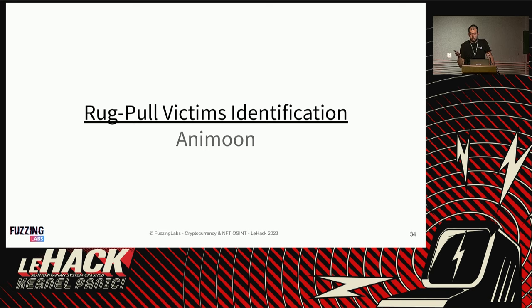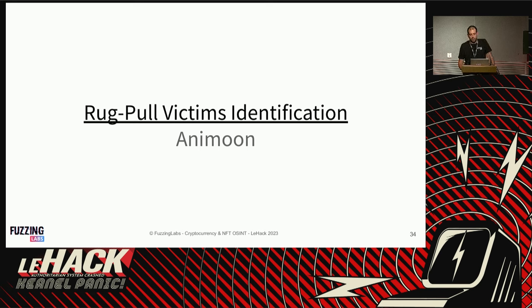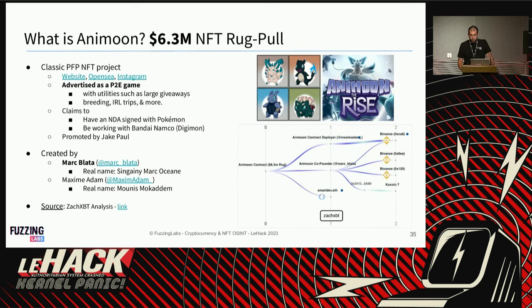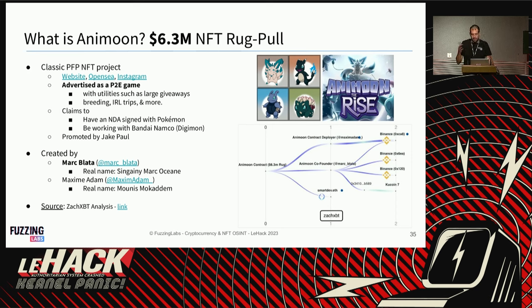We then applied the same analysis to Animoon, a rug pull of 6.3 million dollars advertised as a play-to-earn game — basically a video game where you earn NFTs you can resell. It looked like a melting pot of Pokémon and Digimon; they even claimed an NDA with Pokémon, which is a huge red flag. Promoted by Jake Paul — also a huge red flag. The people behind it are Mark Blatter and Maxim Adam.